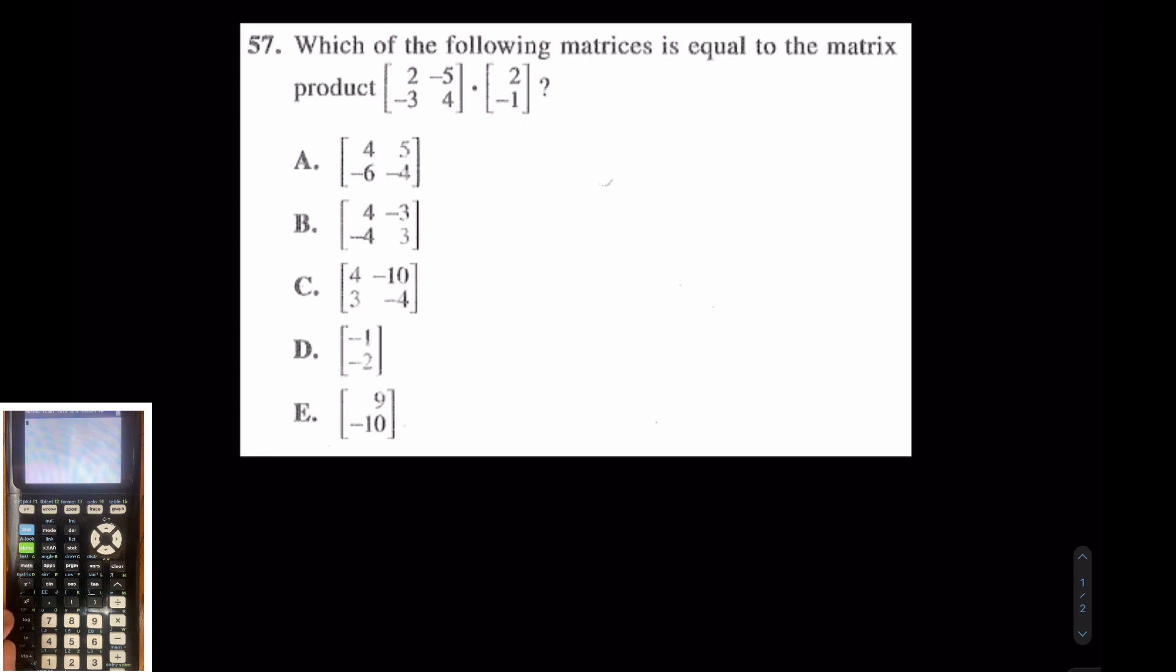All you have to do for questions like this is press second matrix. Go over to edit. Edit in your matrices. Matrix A is a 2 by 2 matrix. This is 2, negative 5, negative 3, and 4. Now that you have edited in matrix A, quit out or just go back to second matrix, and we're going to edit in matrix B. Matrix B is a 2 by 1 matrix, and this is 2 and negative 1.